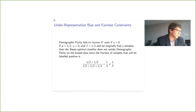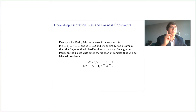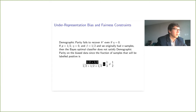Demographic parity doesn't work in the underrepresentation bias model, which is kind of funny because the true data distribution does satisfy demographic parity, but demographic parity doesn't fix the bias. The reason is very simple: it's because the Bayes optimal classifier doesn't satisfy demographic parity on the biased data. So it's the first of those two failure modes we talked about.